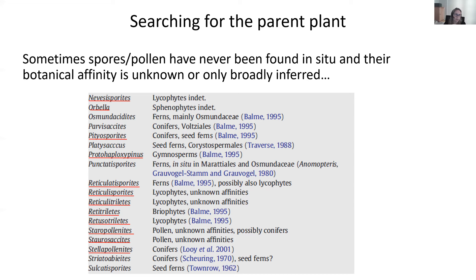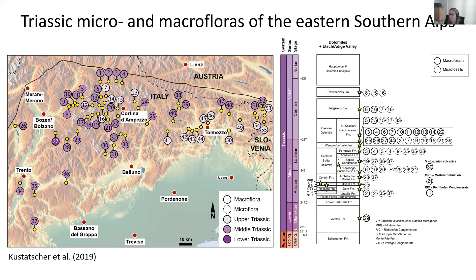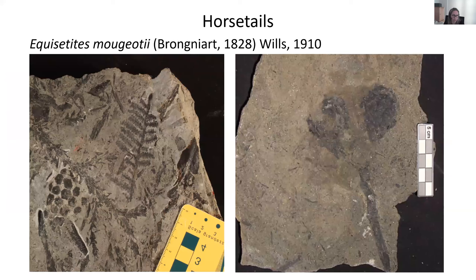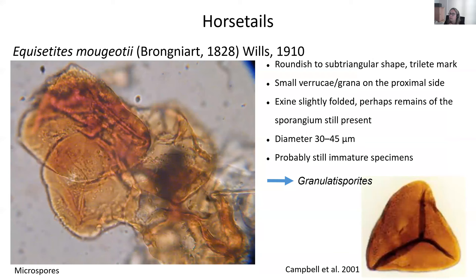We selected the Triassic of the eastern Southern Alps for two reasons. First, I have material from there and it's easy to find. But also because we have very high resolution of different formations where we can find dispersed spores and pollen, but also plants from the same horizons, and we can find a lot of well-preserved material where we can try to extract in situ material. Here you see the first group: Equisetites mogiotis, the horsetails. You can see some nicely preserved strobili attached to the axis. When we macerate them, we get the spores out.